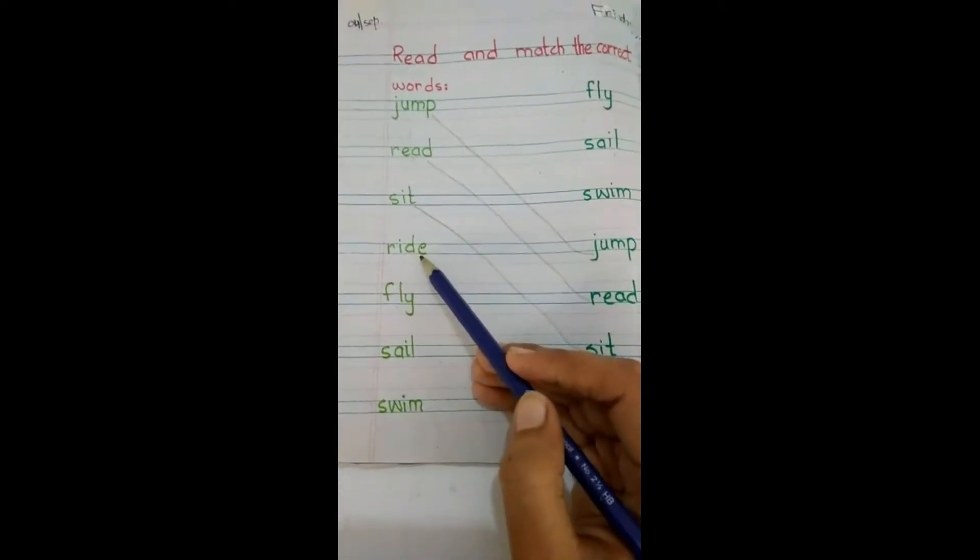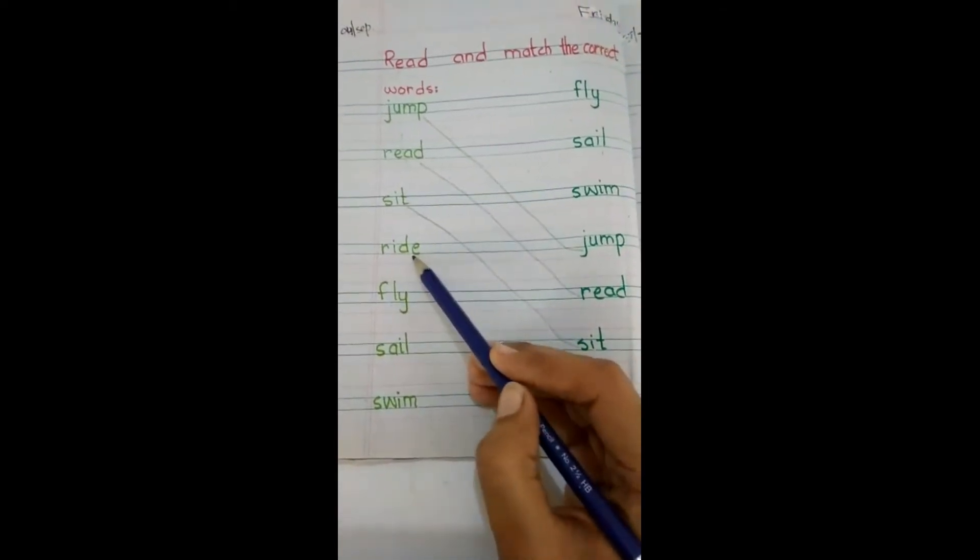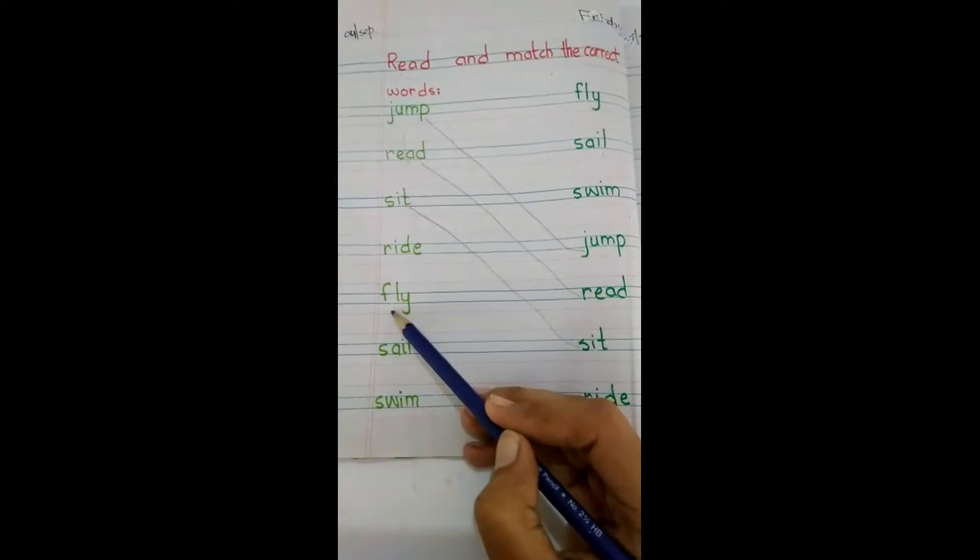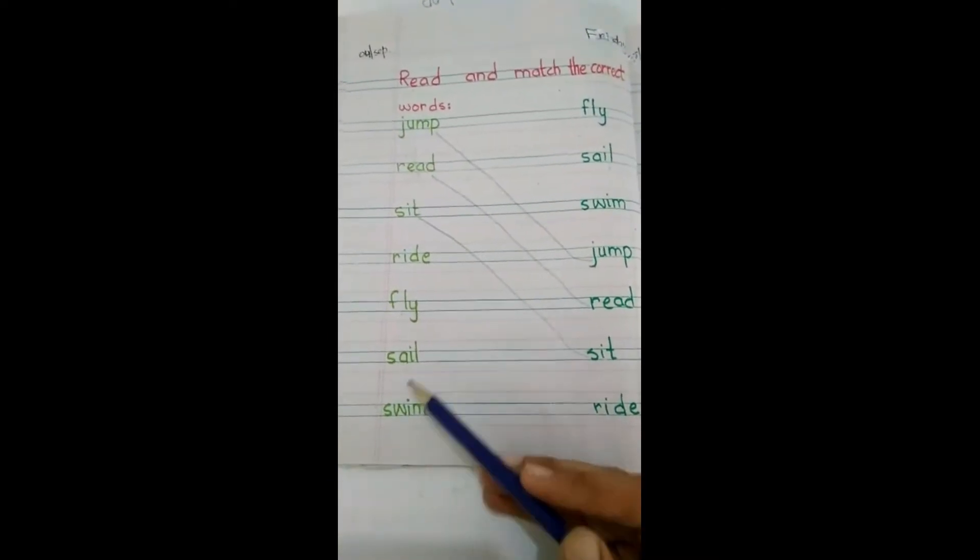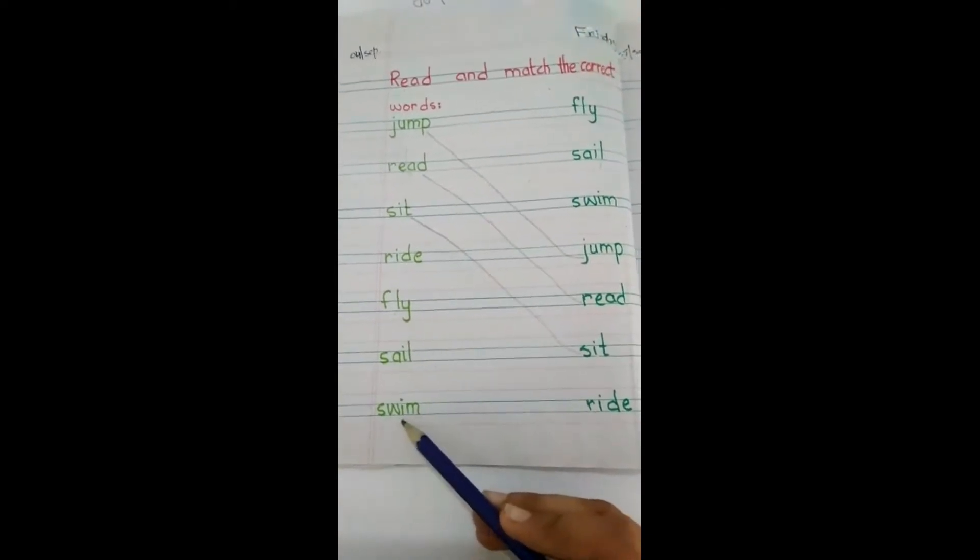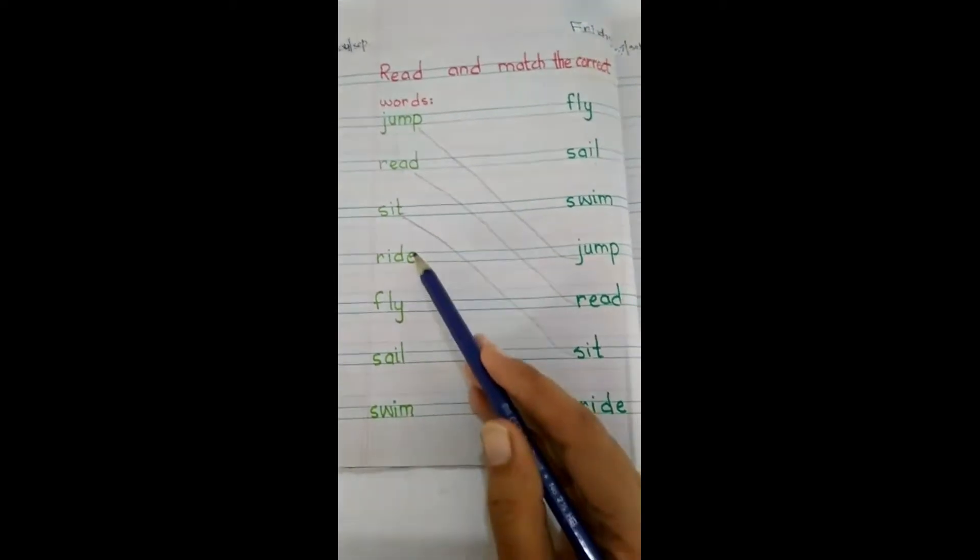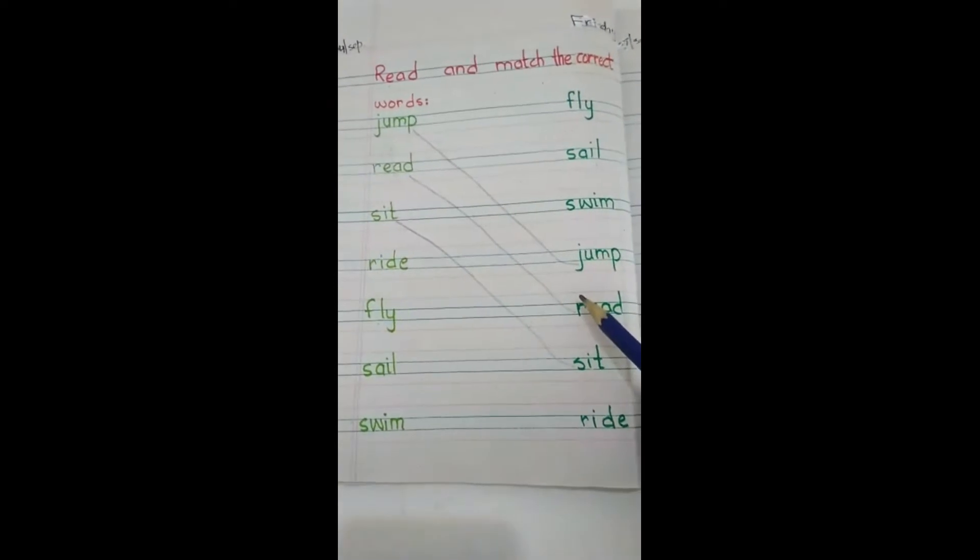Now you have to match ride R-I-D-E ride, fly F-L-Y fly, sail S-A-I-L sail, swim S-W-I-M swim. Now you will match with the correct word by yourself.